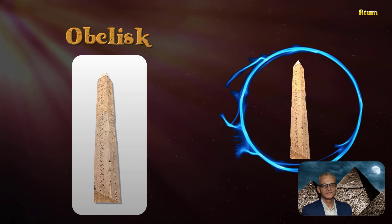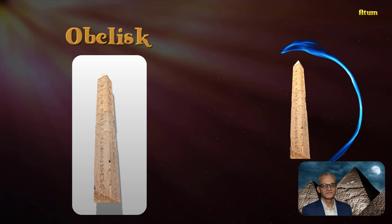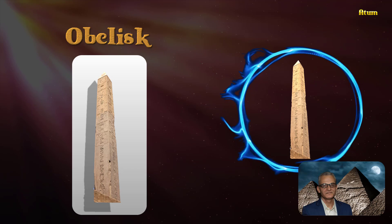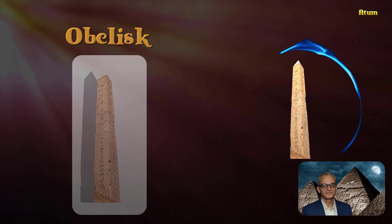Obelisks would serve as a sundial, and the time of day was indicated by the movement of the monument's shadows. So obelisks had a practical purpose — they were essentially a way to tell the time by reading the shadow that it made.